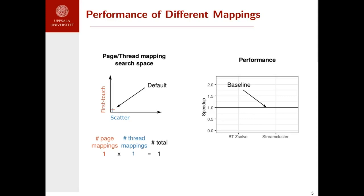By default, we will select the scatter mapping for threads and the first touch mapping for pages. We can see their resulting baseline execution time over two applications, PT and stream cluster. We are only executing the application once, as these are the default policies.